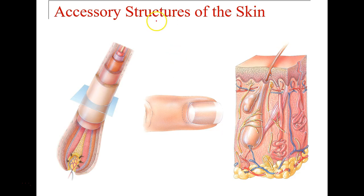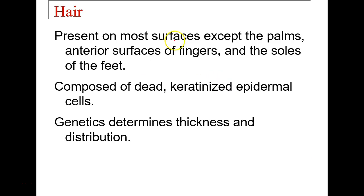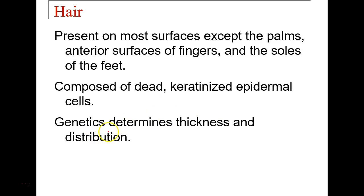Accessory structures will include hair, nails, and some glands. Hair is present on most body surfaces, again except for the palms and soles of the feet. This is going to be dead keratinized epidermal cells, and genetics will determine the type of hair you have.